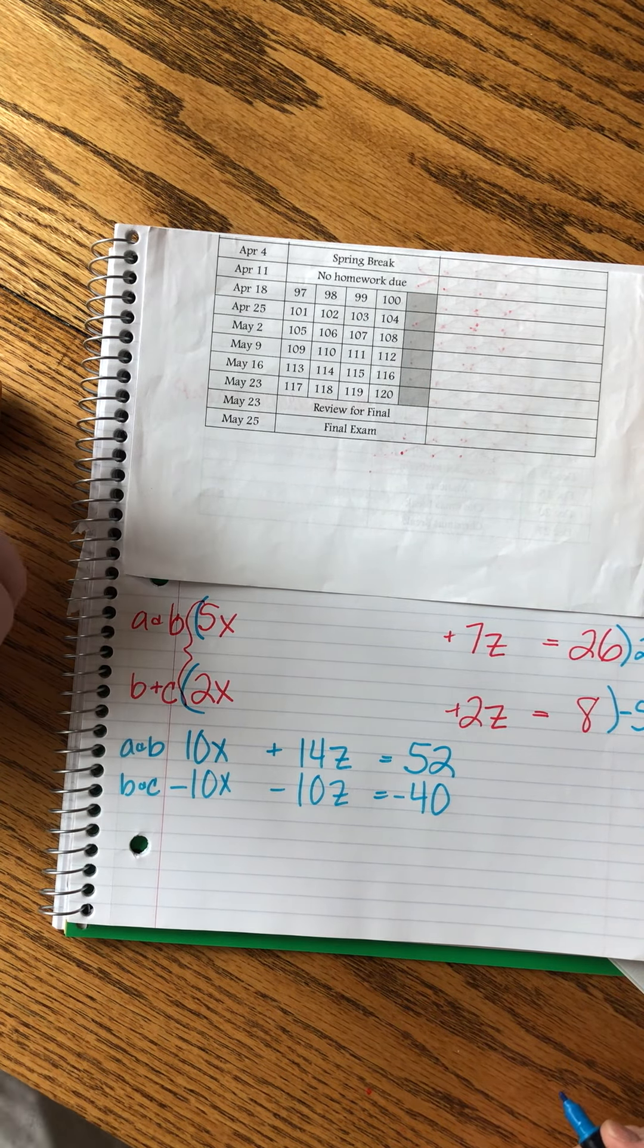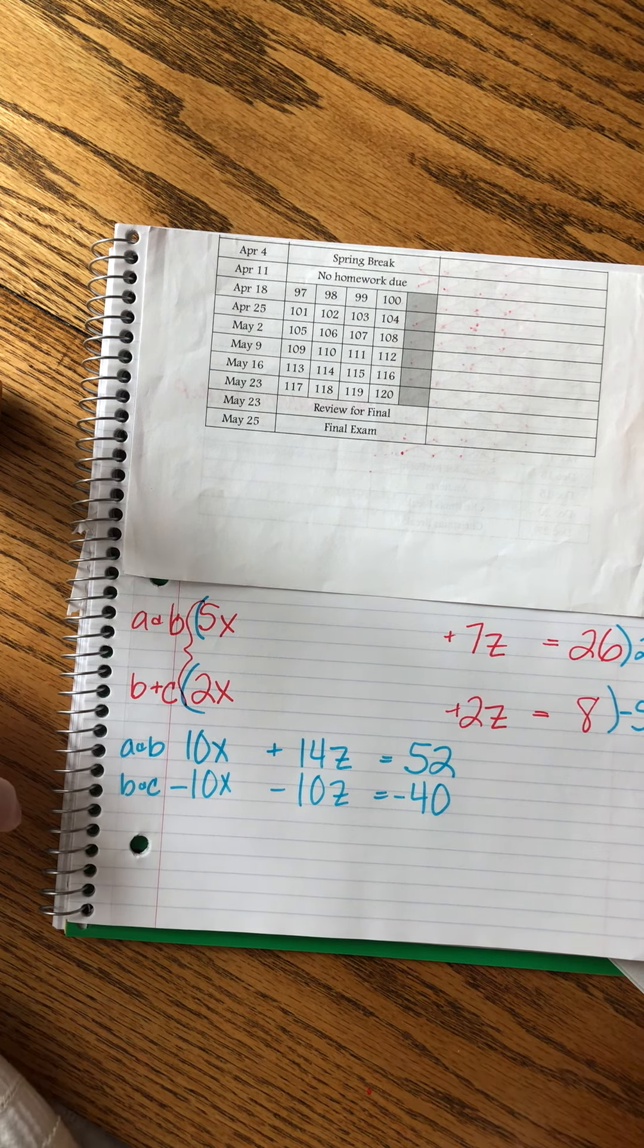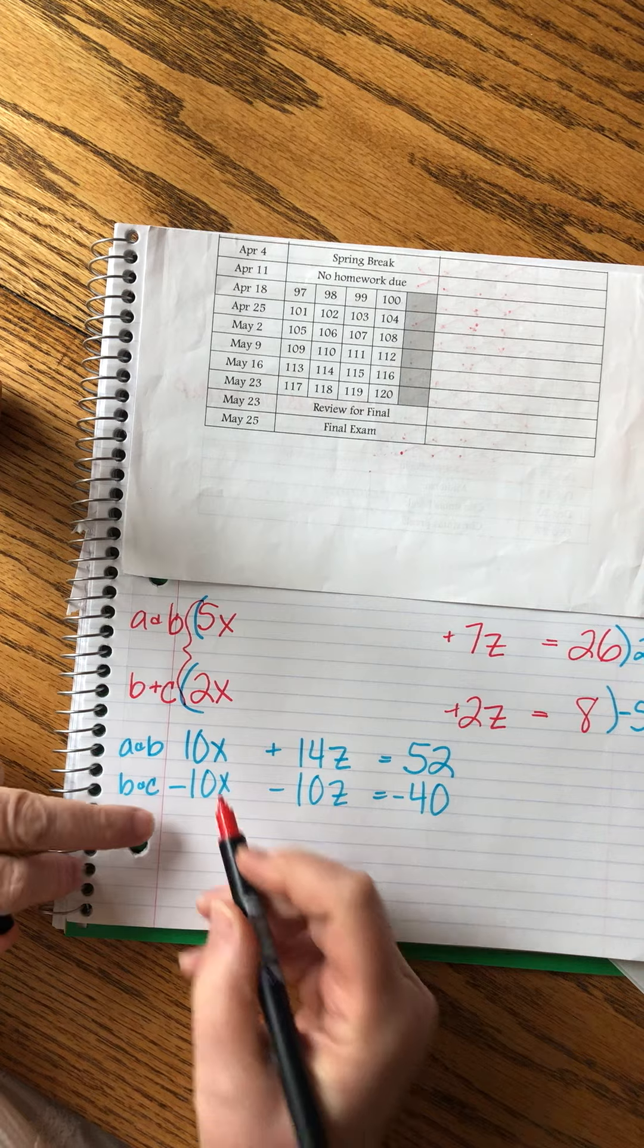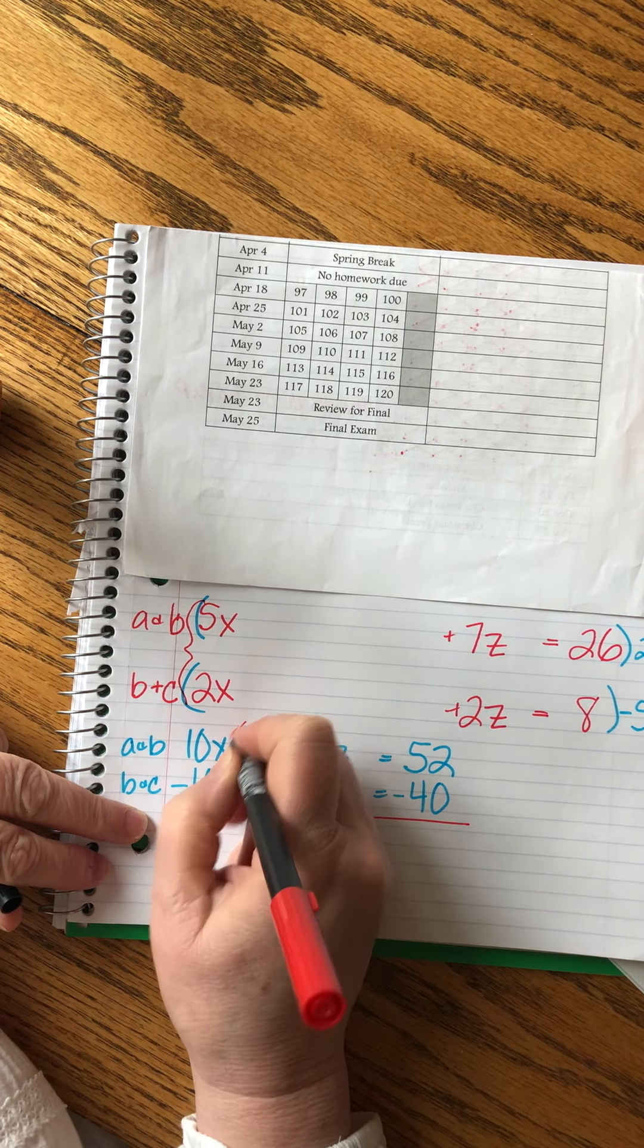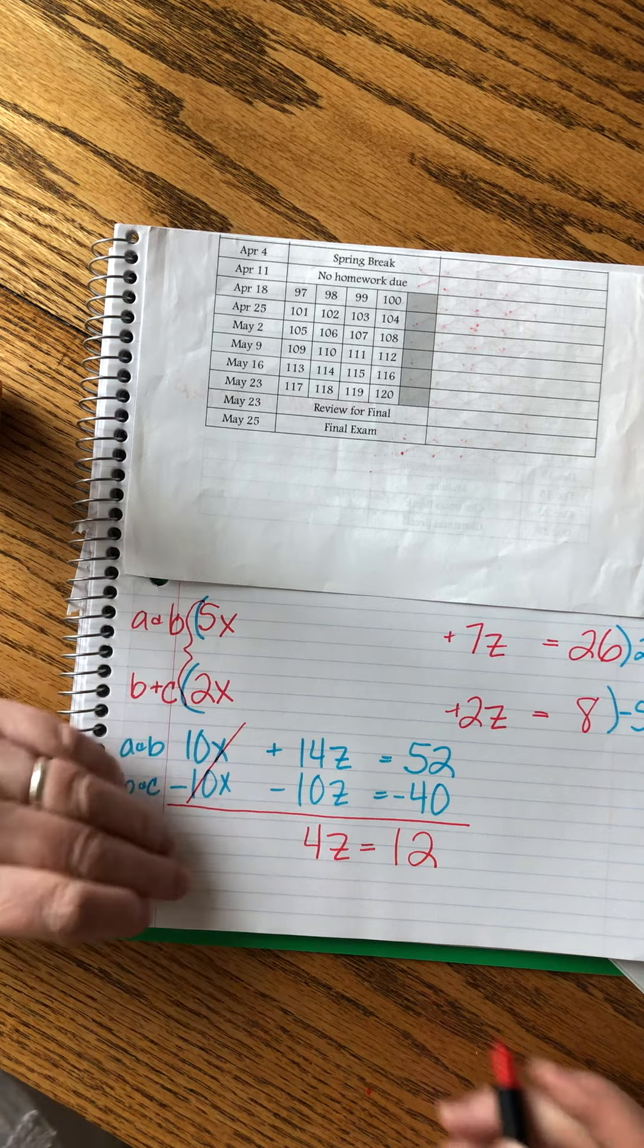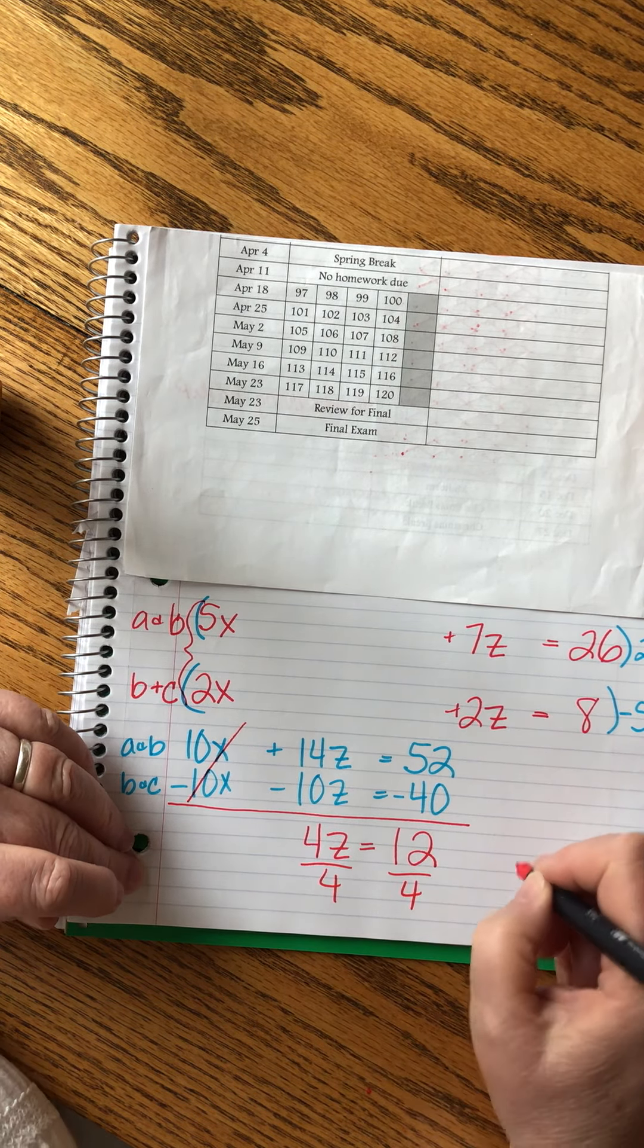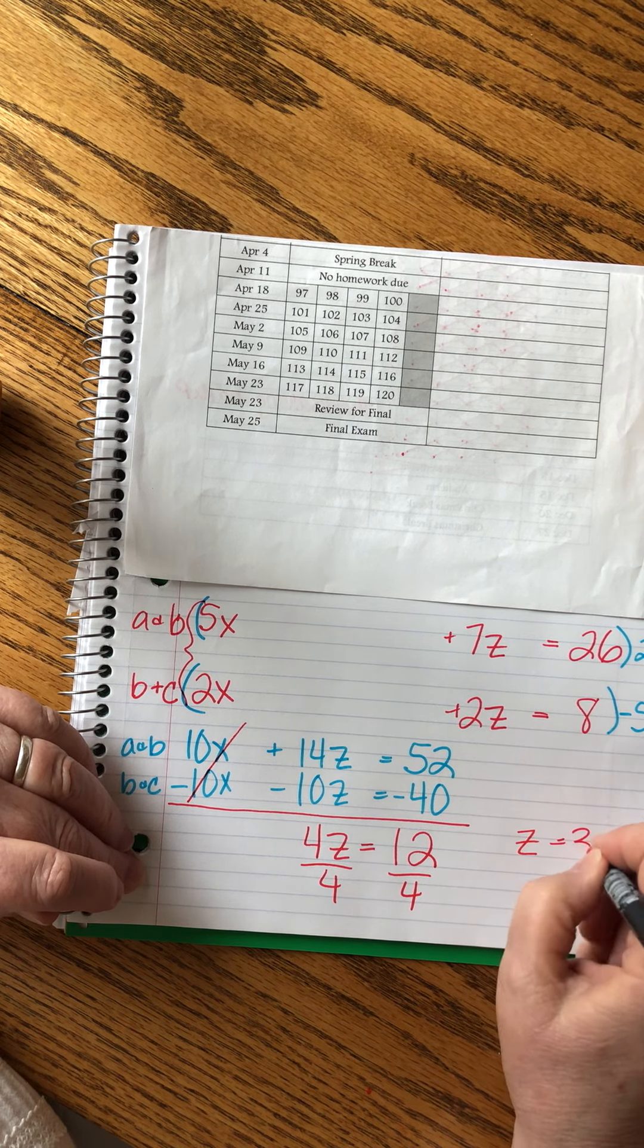Now I'm ready to add these. This cancels. 4z equals 12. So cute. z. I'm going to write it down lower in the list. z equals 3. And then I know I'm going to need a y and an x.